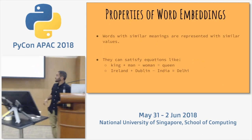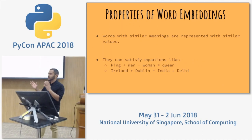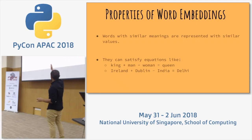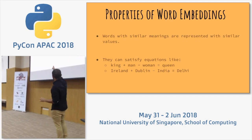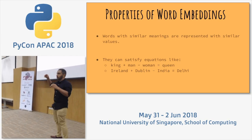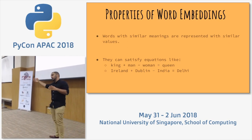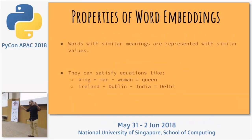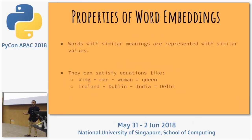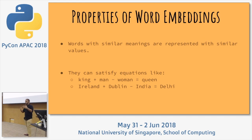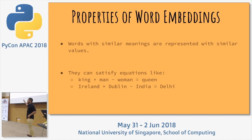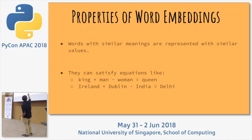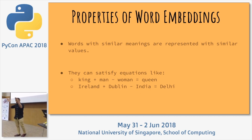Word embeddings are structured so they can satisfy vector equations: king plus man equals queen plus woman, and that word will be very close to 'royalty.' Word embedding models let us do arithmetic on the word vector space in a semantic manner. In another example: Ireland plus Dublin minus India will correspond to something close to 'capital.'